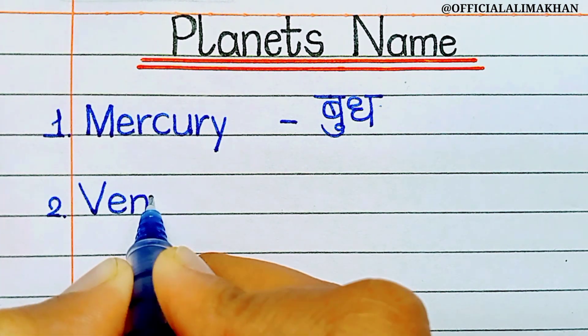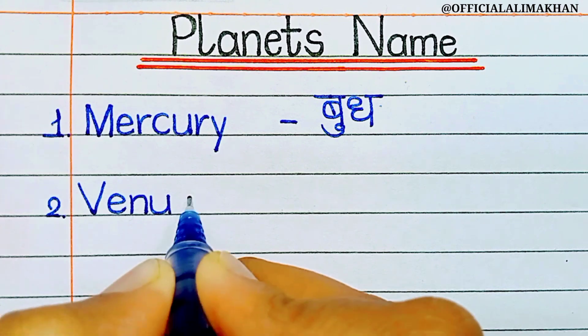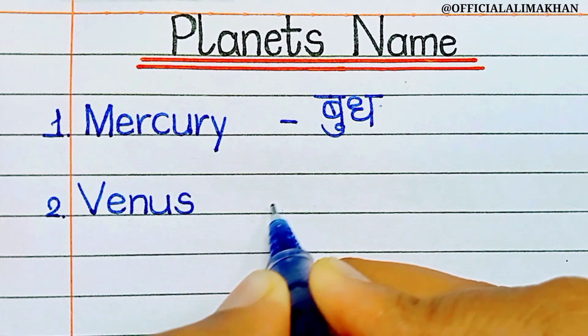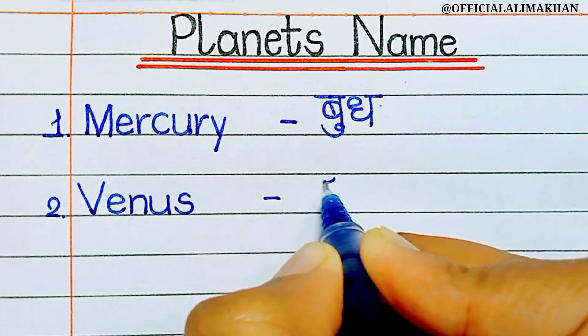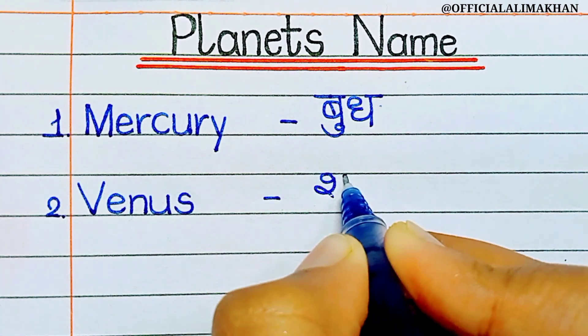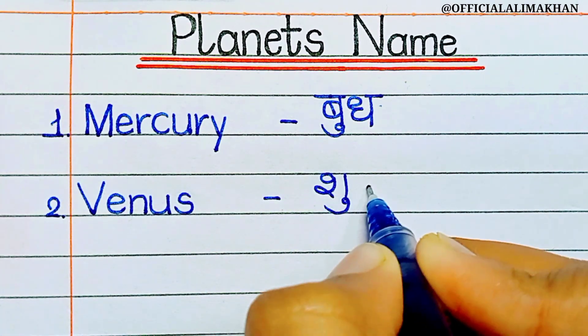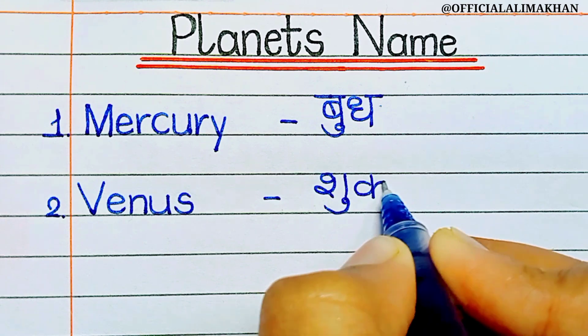Number two, Venus. V-E-N-U-S. Venus means Shukra.